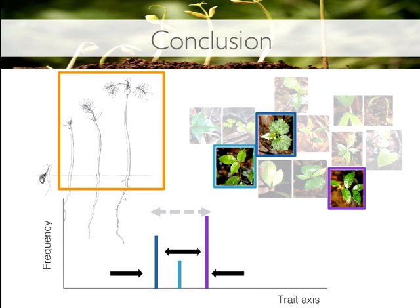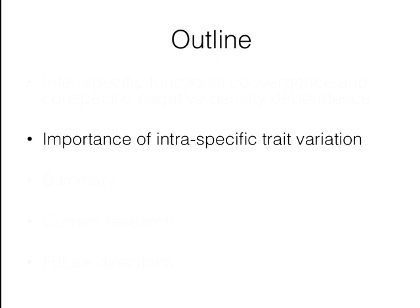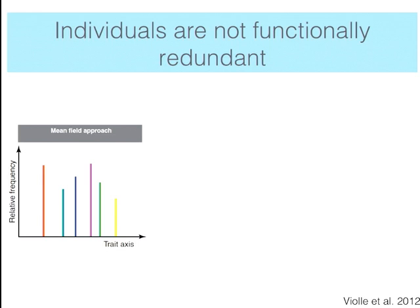One thing I want to highlight from this study is that it sheds light on mechanisms operating within species, but because of the resolution of functional trait data, we were not able to explore them fully. That is why for my second project I wanted to evaluate the importance of intraspecific trait variation as related with patterns of species abundance.